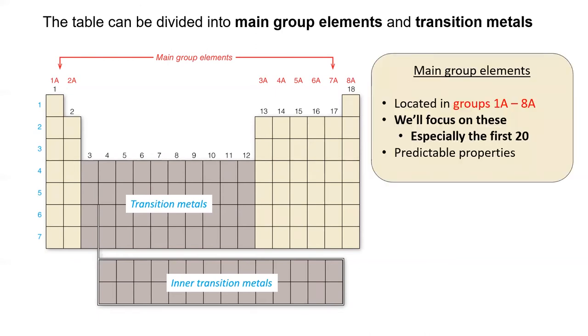The main group elements are situated in the first two and last six columns of the table, numbered 1A to 8A. The chemistry of these elements will be the focus of this class, especially the first 20 elements or so. The properties of these elements are easy to predict because they come from an element's valence electrons, which we'll talk about a lot later.